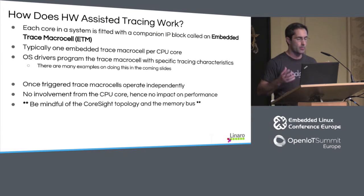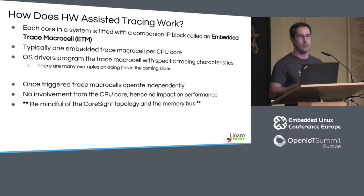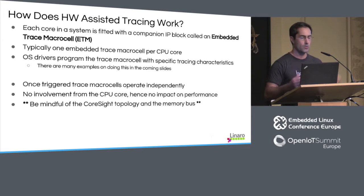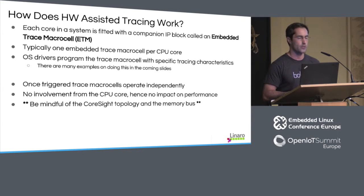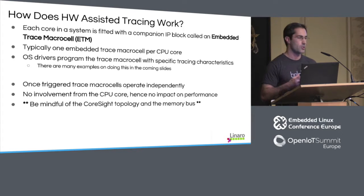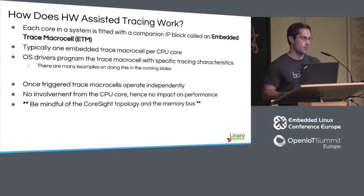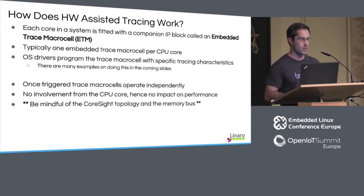Hardware-assisted tracing works by coupling an IP block called an Embedded Trace Macrocell with a CPU. There's typically a one-to-one mapping between an ETM and a CPU. Once the operating system has programmed the IP block, there's no further interaction needed to get tracing going and recording. You program the IP block, you launch the traces, and from there the CPU is not even aware that traces are being collected.